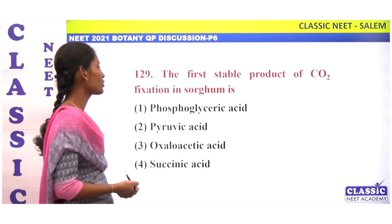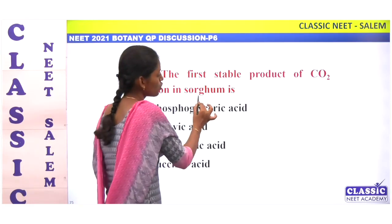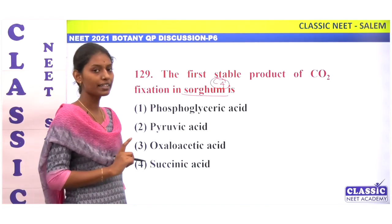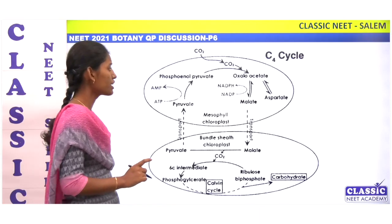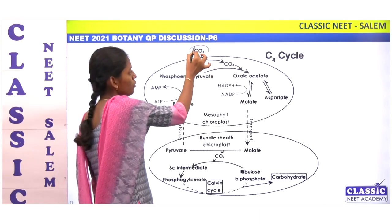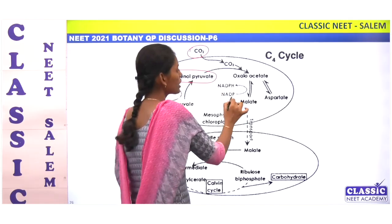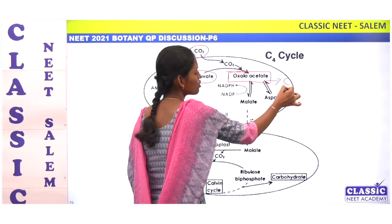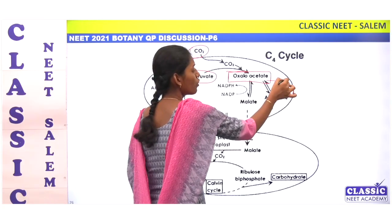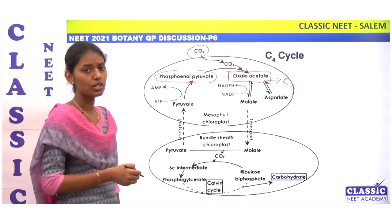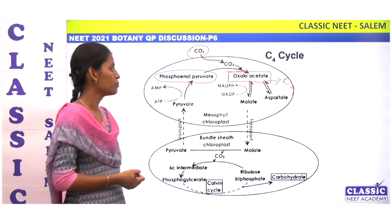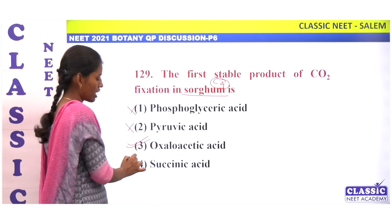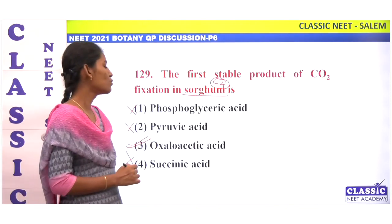The first stable product of CO2 fixation in sorghum — sorghum is a C4 plant. In the C4 cycle, CO2 is accepted by phosphoenolpyruvate. The first stable product is oxaloacetic acid — a 4-carbon compound. That cycle is called the C4 cycle.